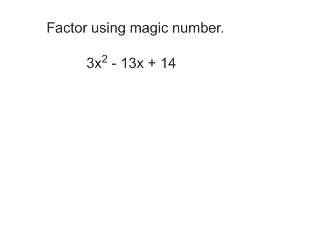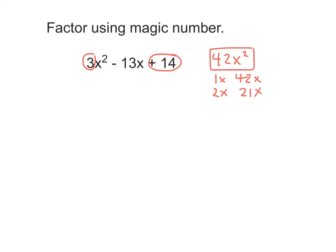So let's factor using magic number. The first thing we notice is that the number in front of x squared is not a 1, so that's why we have to use magic number. I'm going to circle my A and C terms. 3 times 14 is 42, so we need a magic term of 42x squared. Dividing 42 by a bunch of different factors: 1x times 42x, 2x times 21x, 3x times 14x — 3 times 14 is 42 — and it's not divisible by 4 or 5, but it is divisible by 6: 6x times 7x.